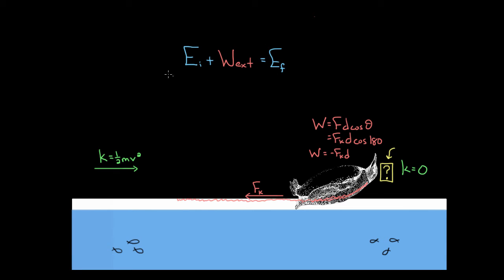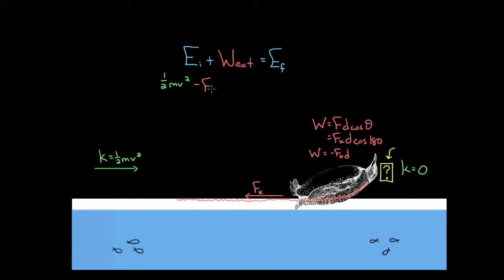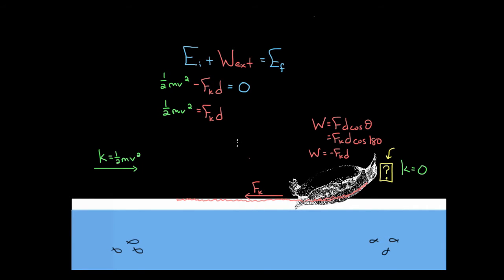We could say that Walter the penguin started with kinetic energy — one half mv squared. We don't have to worry about gravitational potential energy because Walter's not changing his height; he's just sliding straight along the ice at a horizontal level. We add the external work done, which is the work done by friction: negative FkD, because it was negative work. Walter ends with no kinetic energy, so there's no final energy. This means one half mv squared has to equal FkD — the magnitude of the work done by friction.